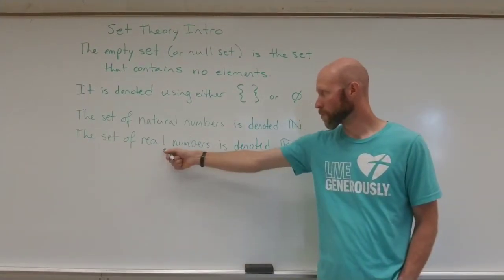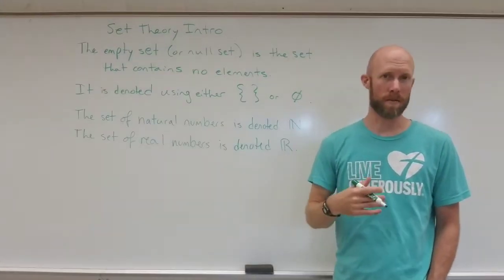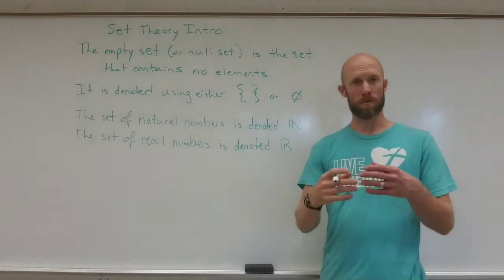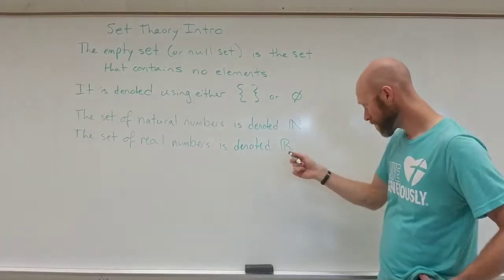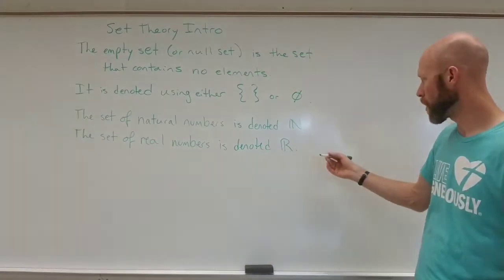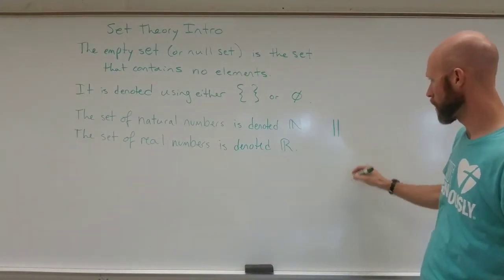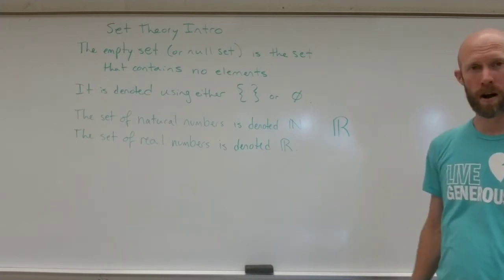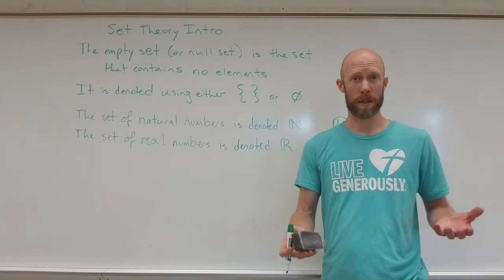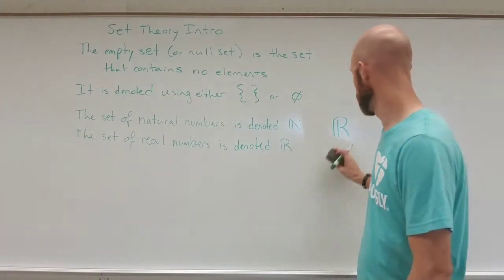And then of course a set of real numbers which is all of your positive numbers, negative numbers, zero, all that combined, everything you would find on a number line is denoted by a capital boldface R. Again to write that you would write the two lines on the left and then finish your R. Of course if it's in a textbook it just looks like a capital bold R.